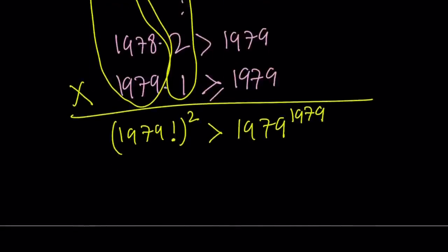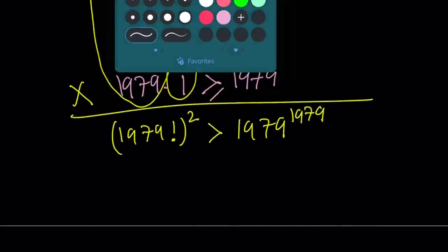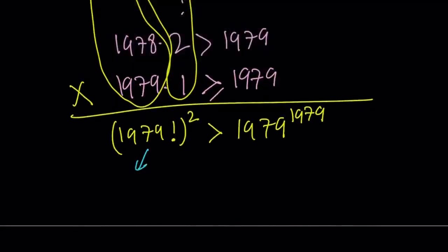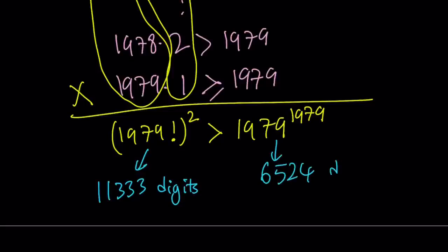Now let's take a look at the number of digits of these numbers. This is a number with 11,333 digits. I'm talking about the square of the factorial, which is wow, that's crazy. And this is a number with 6,524 digits. So it's almost like twice the number of digits. Obviously, they're very much apart. This number is much, much larger. But that's it.